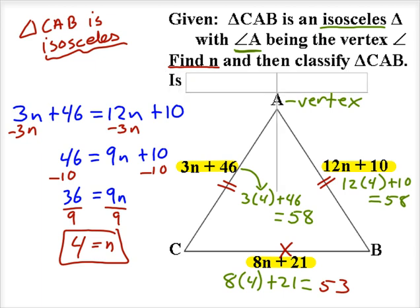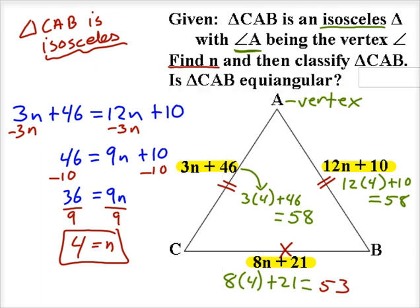And so in response to the question, is triangle CAB equiangular? Well no. And the reason it's not is a triangle must be equilateral to be equiangular. And this is not equilateral, so therefore it's not equiangular.